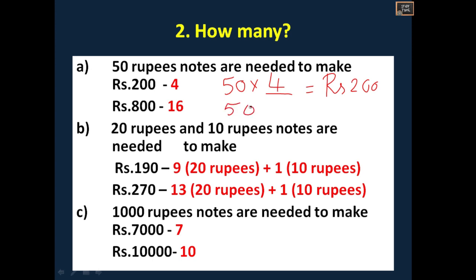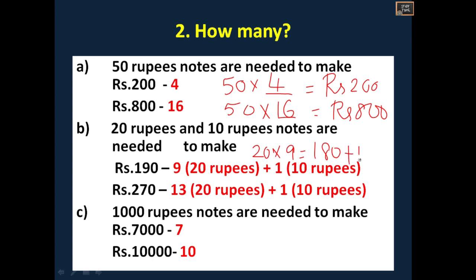50 into dash is rupees 800. Here you will be getting 16, because 16 into 50 is 800. How many 20 rupee and 10 rupee notes are needed to make 190? That is 9 twenty-rupee notes plus 1 ten-rupee note. 20 into 9 is 180 plus 10 rupees. You will be getting 190.